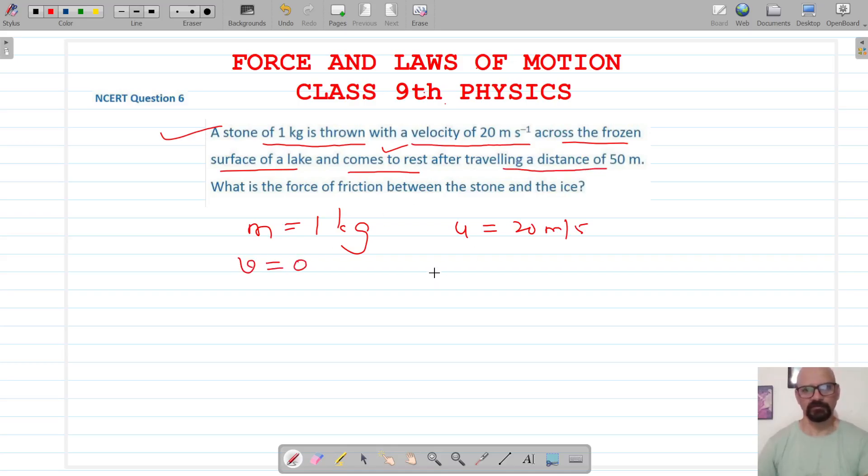After traveling a distance of 50 meters, the distance is 50 meters. We have to find the force of friction between the stone and the ice. The force of friction is mass into acceleration, so we have to find the acceleration.